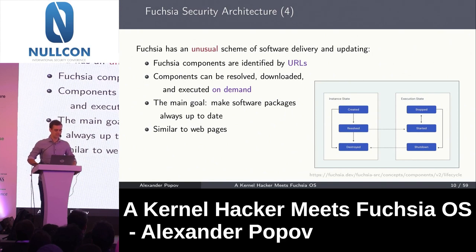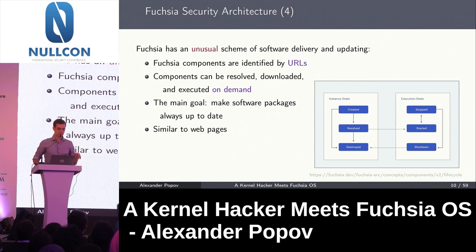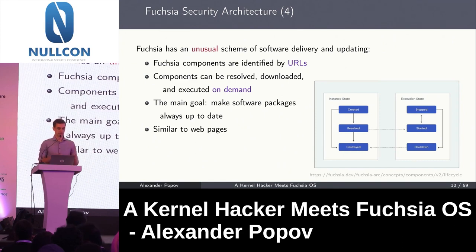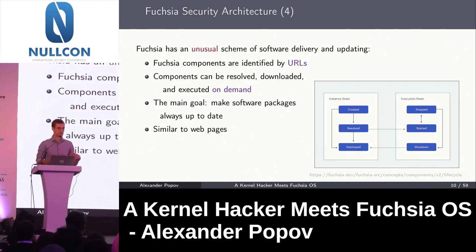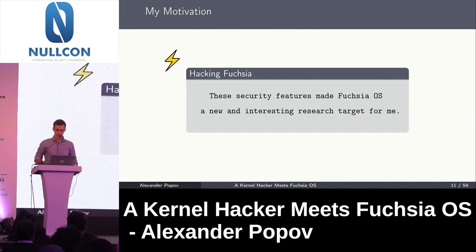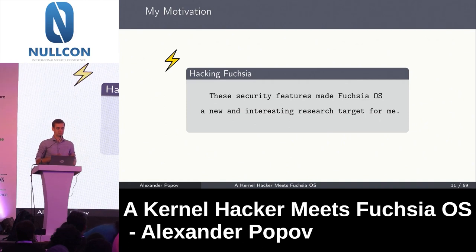The last very interesting aspect is that Fuchsia has a very unusual scheme of software delivery. Components in the system are identified by URLs. When you want to execute some application, you specify this URL and the software is downloaded to the system on demand. The idea is to make software packages always up to date when you start them — just like web pages. All four of these architecture decisions make Fuchsia a very interesting research target.